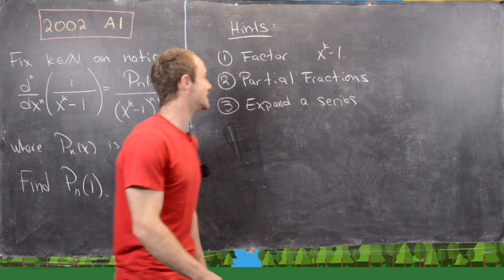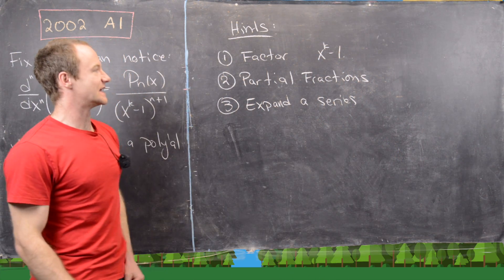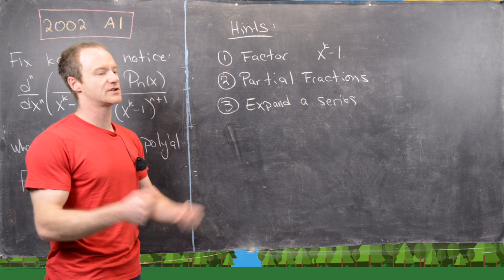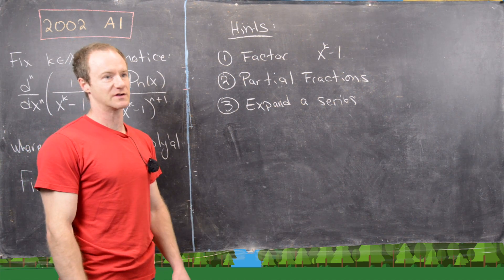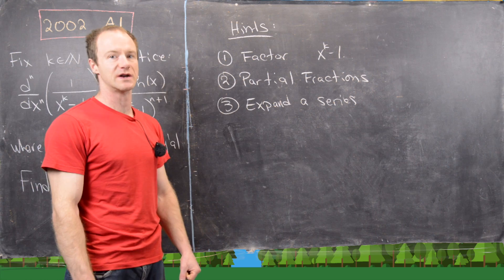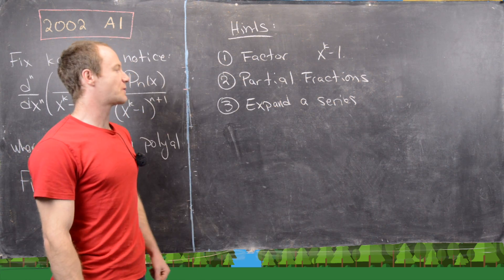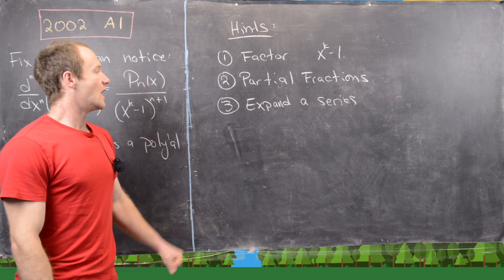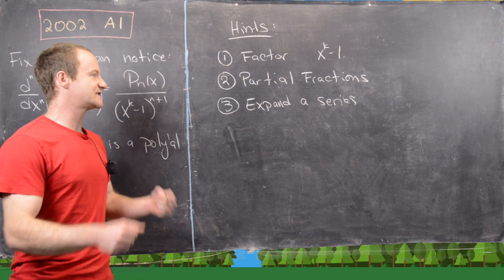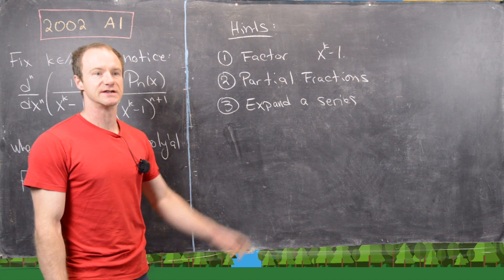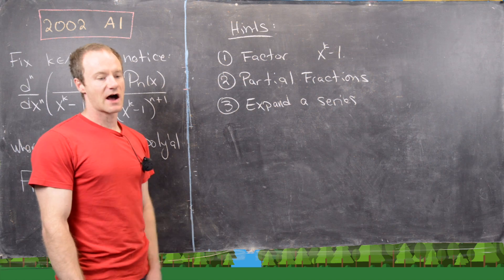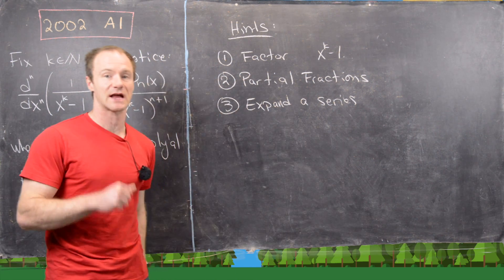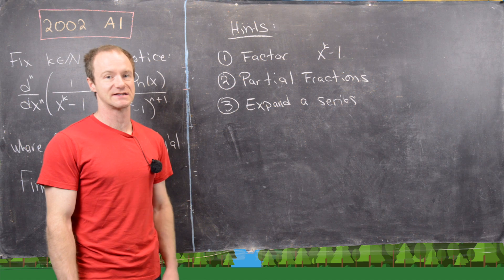Here are some hints. The first hint is to factor x^k minus 1 — there's a standard way to factor polynomials like that. Then use partial fractions. And finally, you'll finish this off by expanding a series. I urge you to pause the video and try this problem using these hints, and we'll be right back to see a solution.